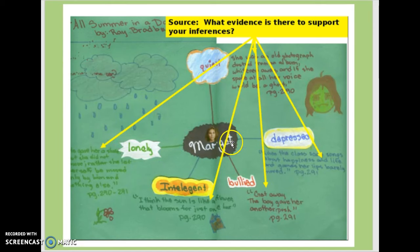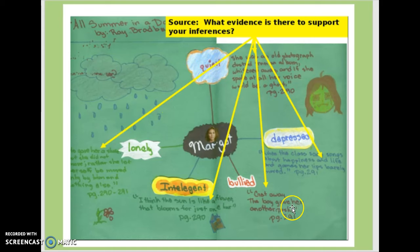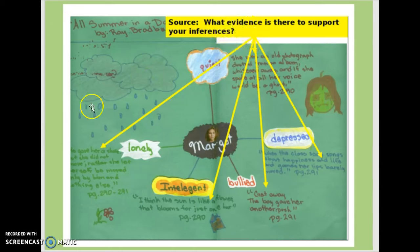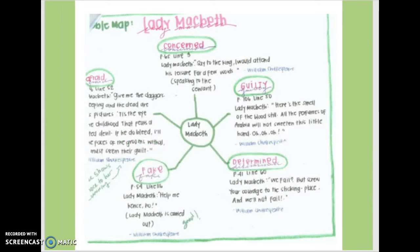Another bubble map features Margot and all the things she is and how she changes throughout the story. They put the adjectives in the circles, drew some visual aids around it, and also cited evidence with page numbers from the text. Just having kids cite evidence brings that from a DOK1 up to at least a DOK2. Then another example: Lady Macbeth — more citing sources, adjectives that describe Lady Macbeth, and then how we know that, where the sources are.